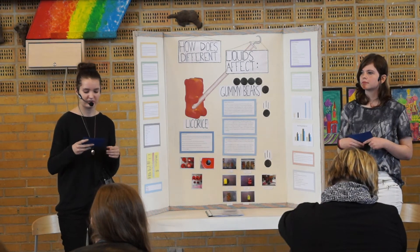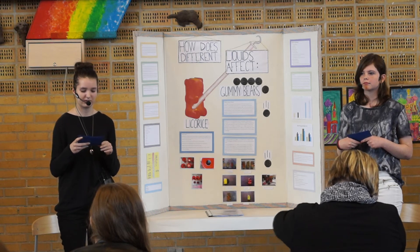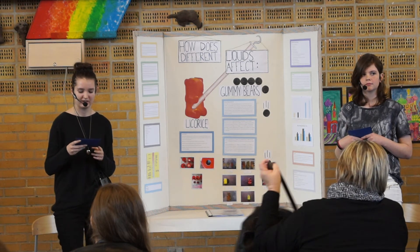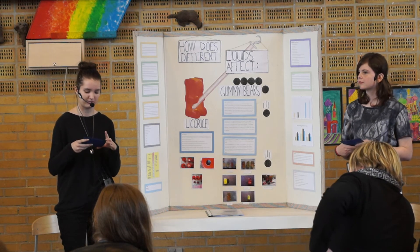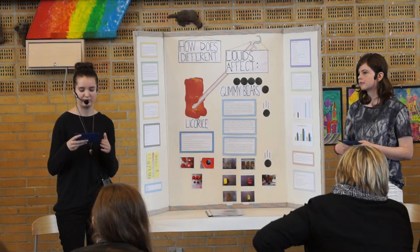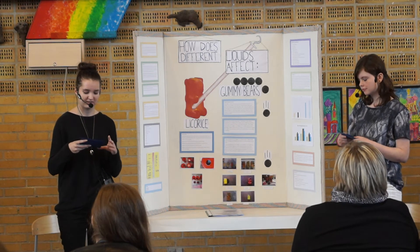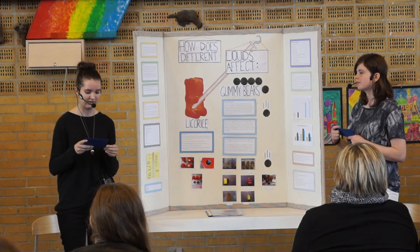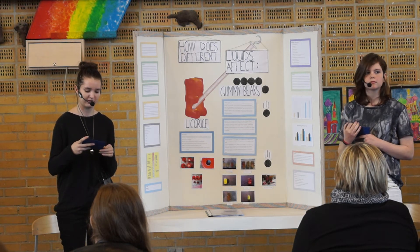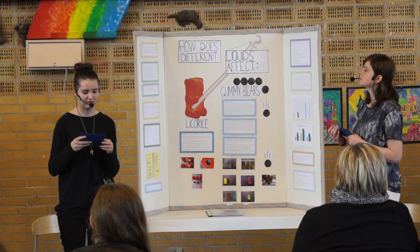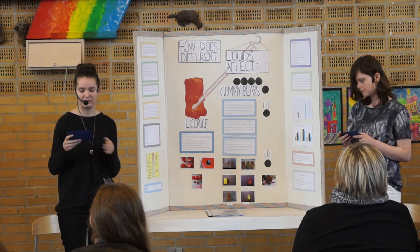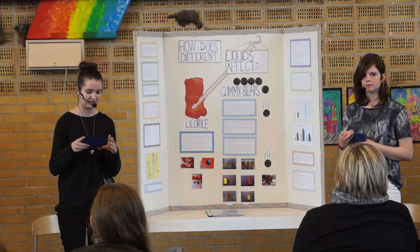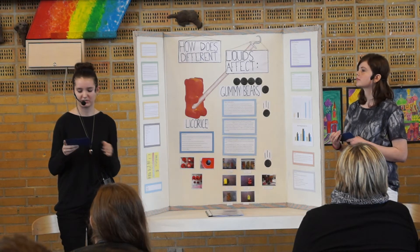The gummy bear measurements were: in water, 0.7 cm in height, 0.1 cm, and 1.2 cm. In another liquid, 1.5 cm in height and 1.2 cm, or 2 cm, making a breadth of 5.2 cm. In another liquid it was 1.5 cm in height, 1 cm in breadth, and 0.8 cm in depth. The water measurement was 1.5 cm in height, 1.4 cm in breadth, and 1.2 cm in depth.